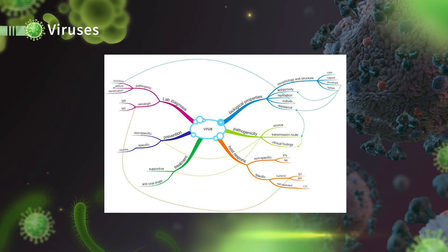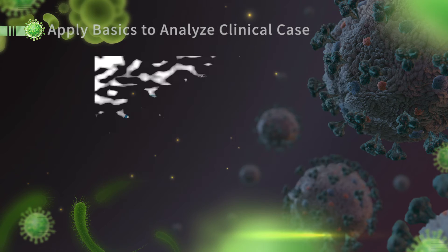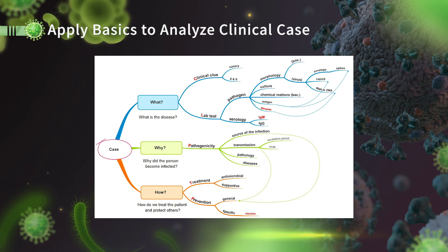How do we get to know all about them? As mentioned previously, when we learn about viruses, we need to know the biological properties of the virus, pathogenicity and immunity, lab diagnosis, and prevention and treatment of the disease. More importantly, we need to apply the basic knowledge to analyze clinical cases. Each time, we will discuss the virus based on a clinical case.